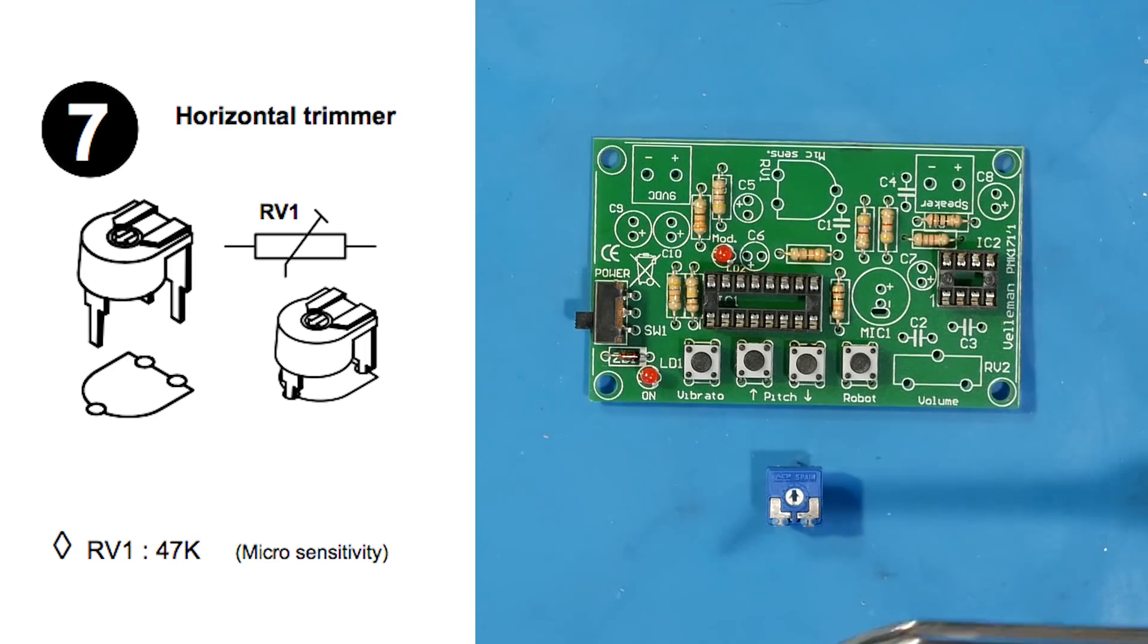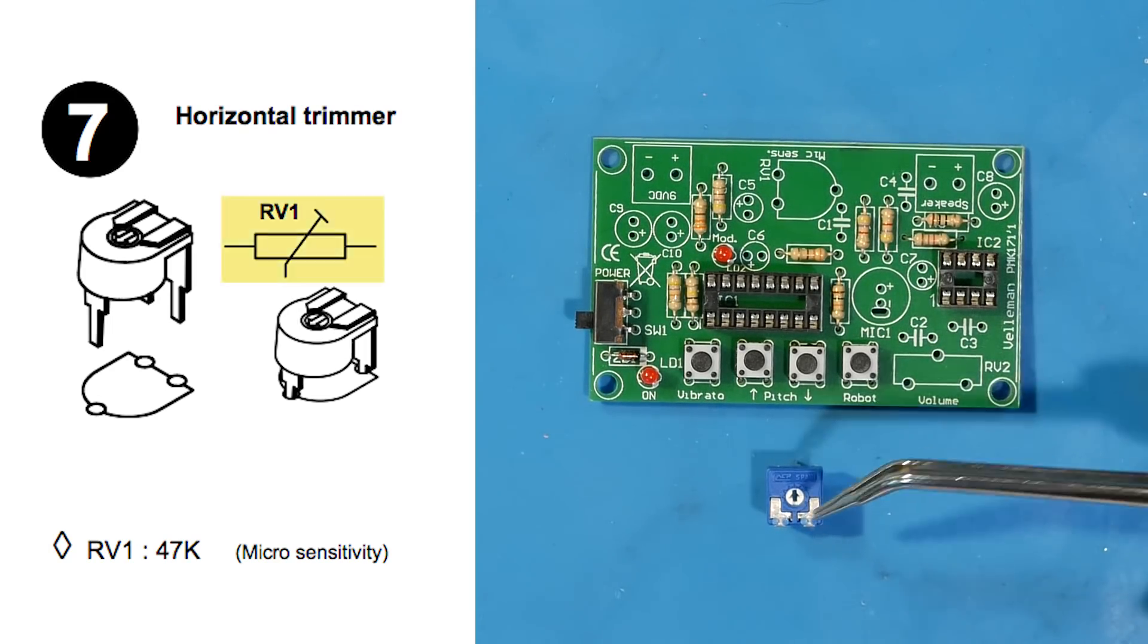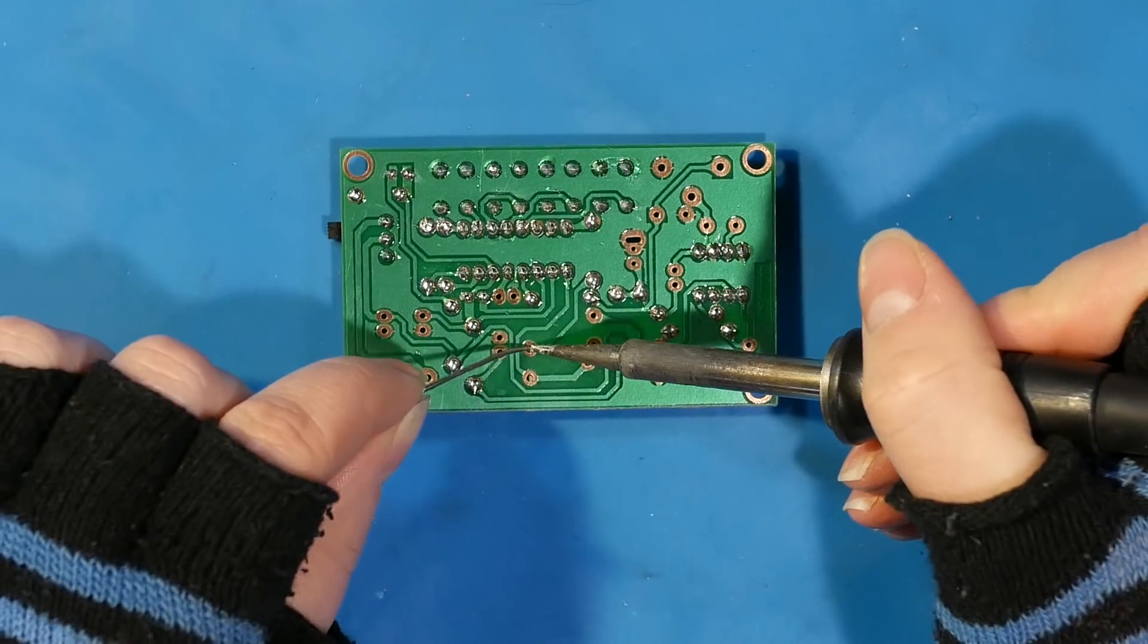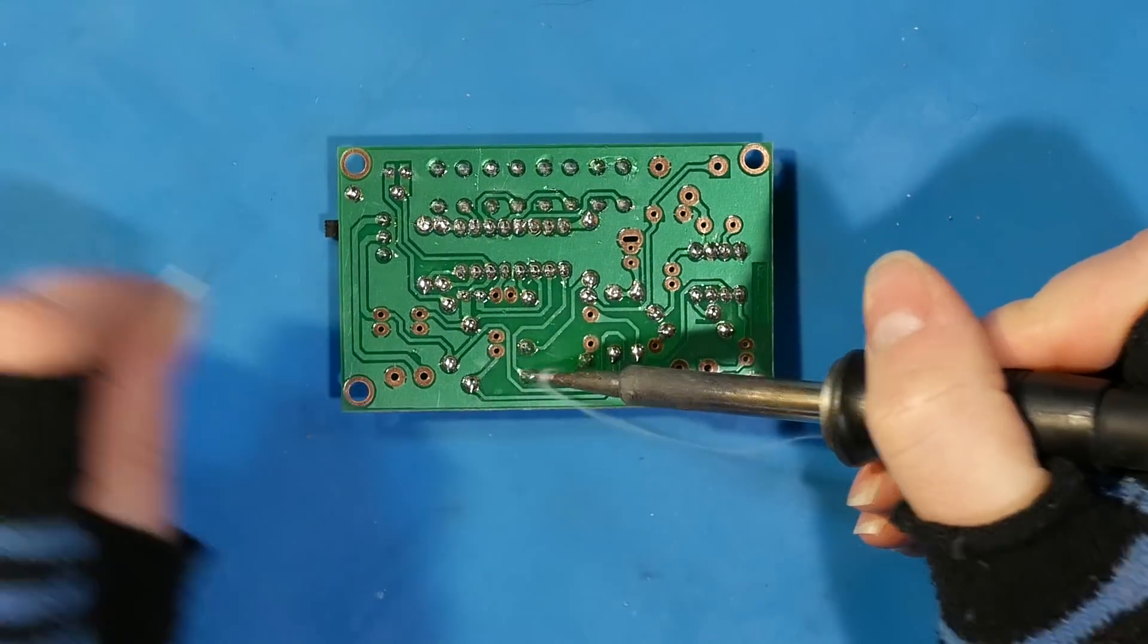In step seven, we place the horizontal trimmer pot. Now, remember, a trimmer pot is a variable resistor, so we're looking for RV1 on the board. This trim pot will control the sensitivity of the microphone. You'll probably need a small screwdriver to use it.